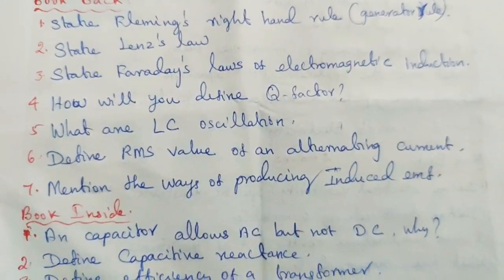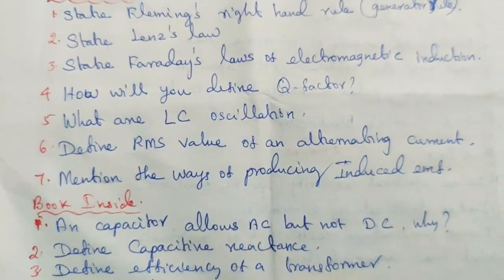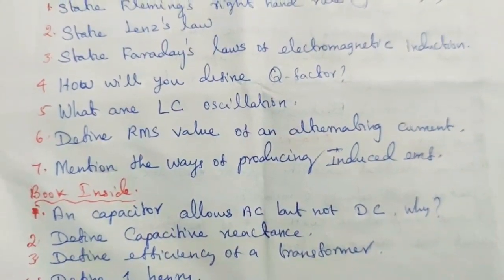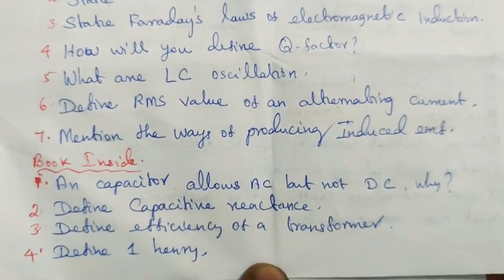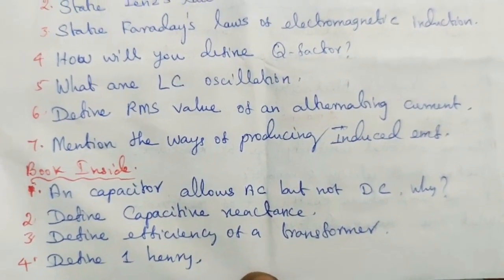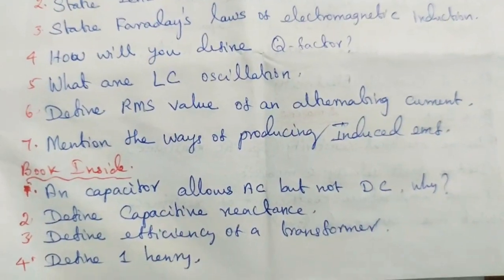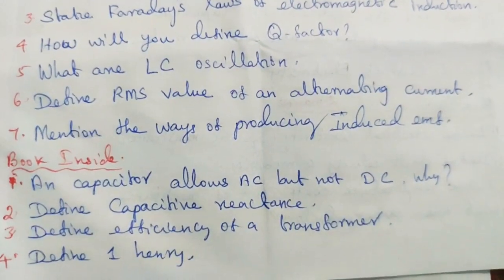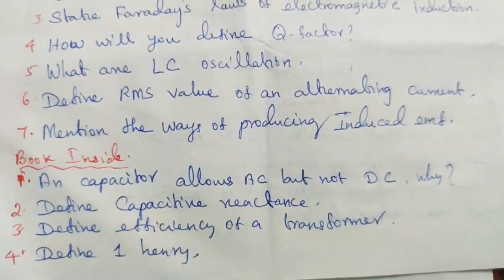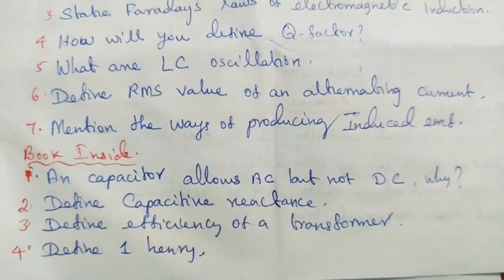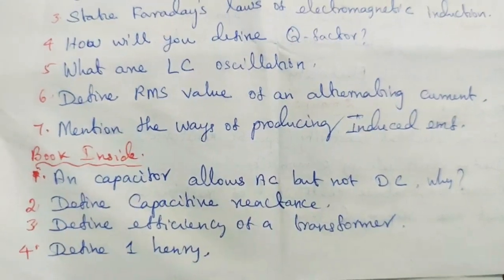Book inside questions: A capacitor allows AC but not DC — why? Define capacitive reactance. Define efficiency of a transformer. Define one Henry.